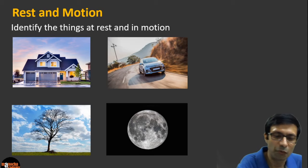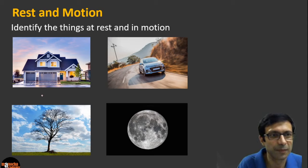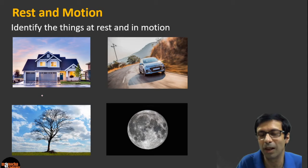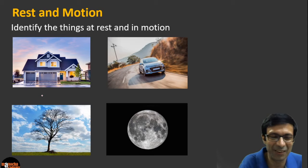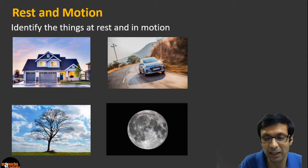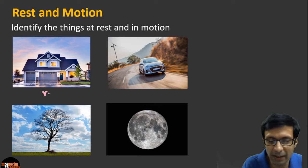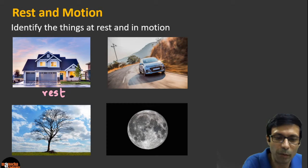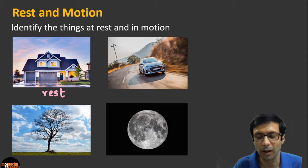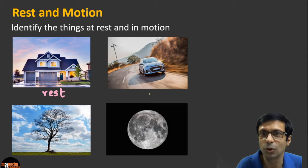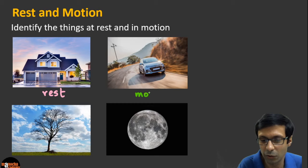Let's start with the first picture — it's a house. Is the house at rest or in motion? People are saying the house is at rest — that's right. What about the car? You can see the car is traveling on the road. Is the car at rest or in motion? It's in motion — clearly a moving car is in motion.